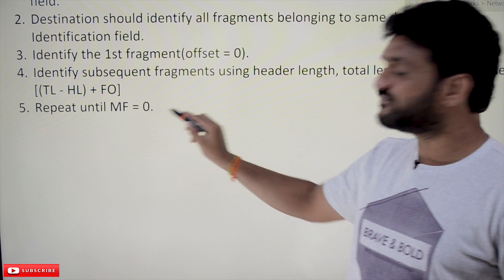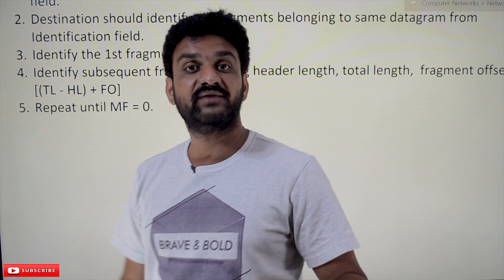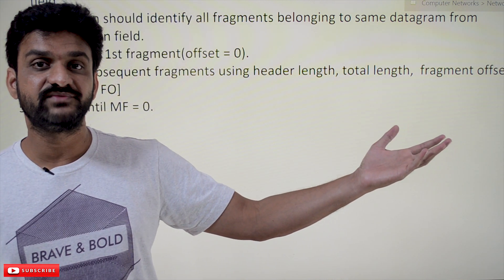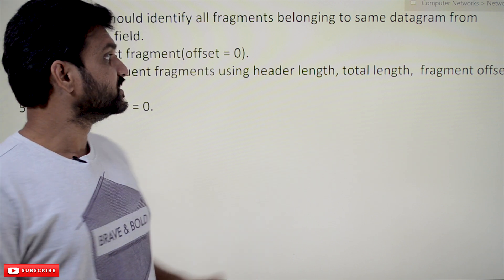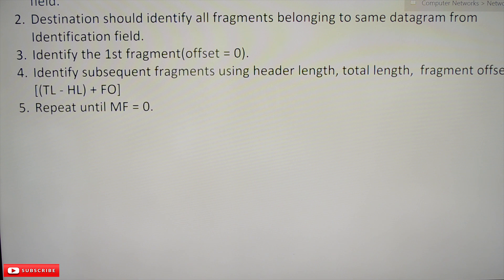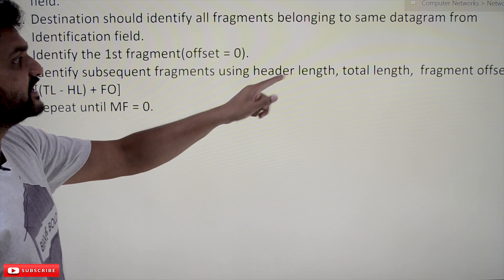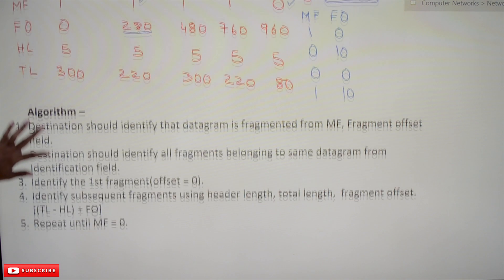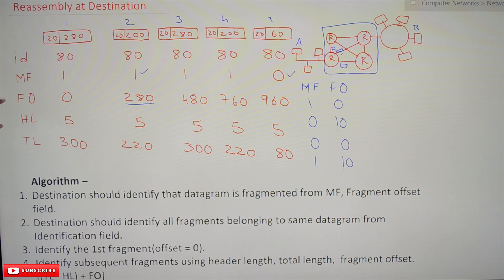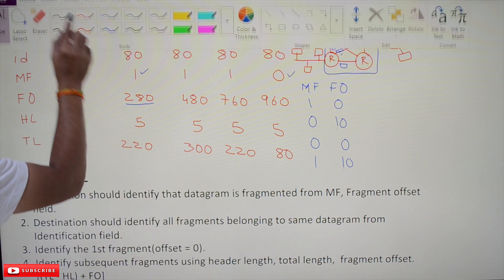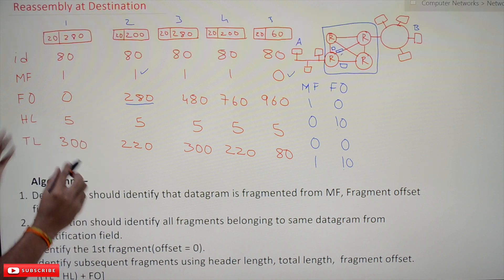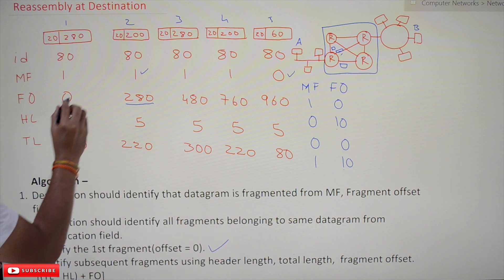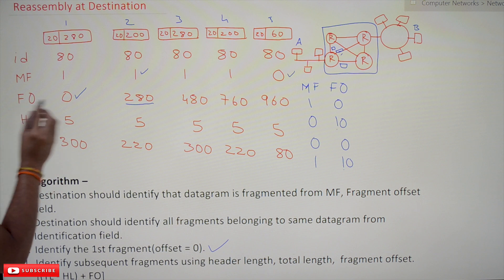This step has to be repeated until the value of MF is equal to 0, which means this is the last fragment. In the third step we identified the first fragment: if the fragment offset is equal to 0, it means this is the first fragment. Now the subsequent fragments have to be identified.